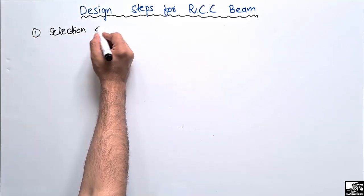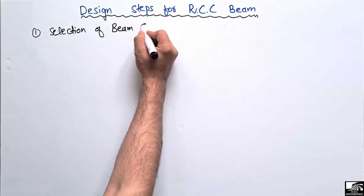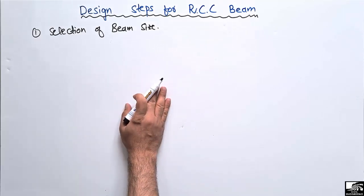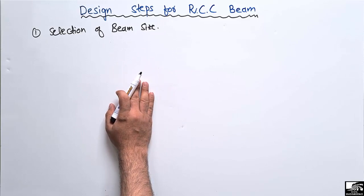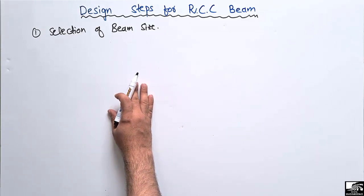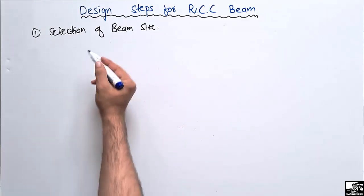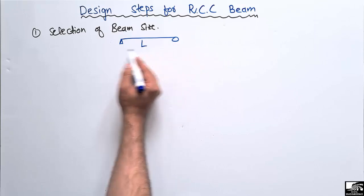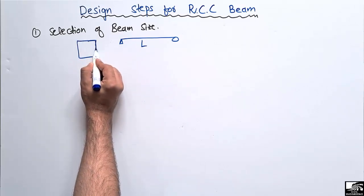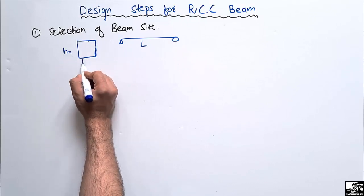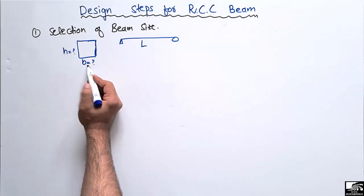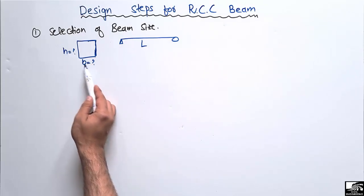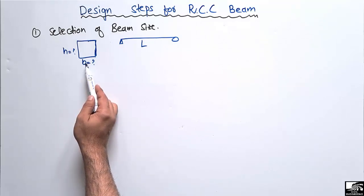Selection of beam size is our first step in the design of an RCC beam. We need to determine the dimensions of the beam — for example, the thickness or height of the beam and the width or breadth of the beam. Consider a simply supported beam of length L. Its cross-sectional dimensions, height and width, are unknown, and in this first step we have to select them.